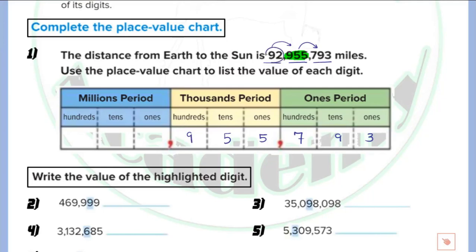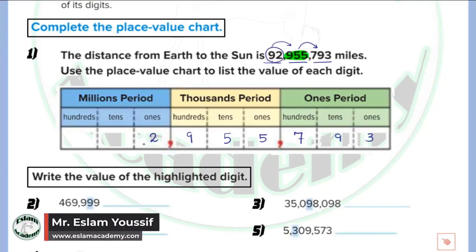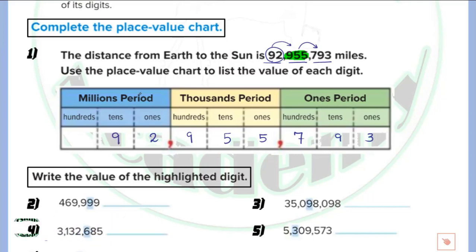For the millions period: 2 lies at the ones place, so it equals 2 million. 9 lies at the tens place, so it equals 90 million. And that is how we use the place value chart to write the value of each digit in the number.